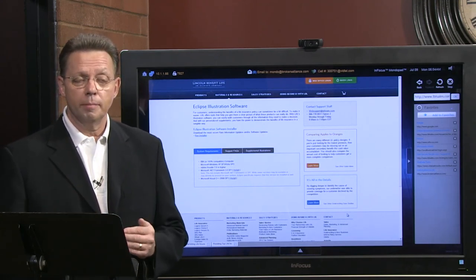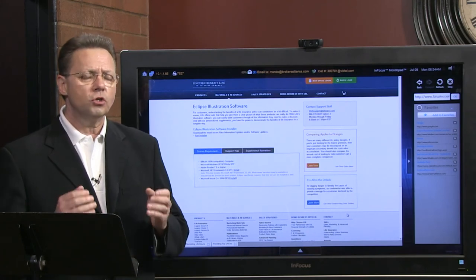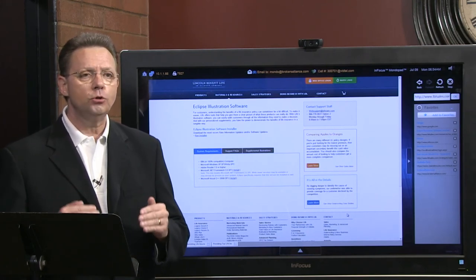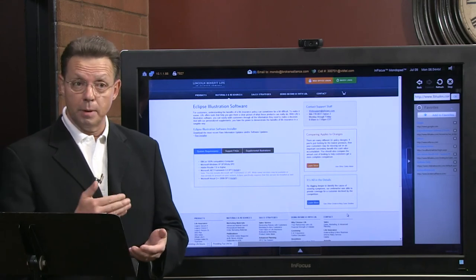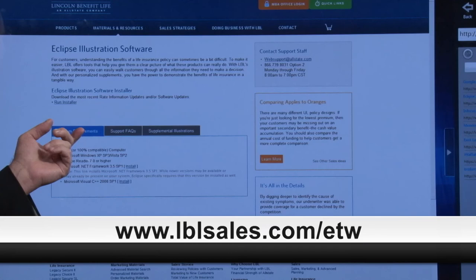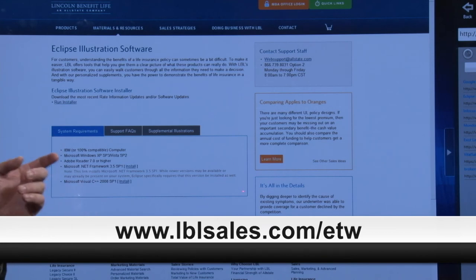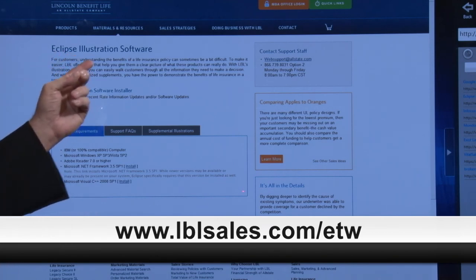Today we're using Lincoln Benefit software. We've been encouraging you these last couple of months to download their software because we believe it's a great tutorial and you'll be able to go with us page by page. Just go to www.lblsales.com/etw. When you come to their site, you'll see Eclipse illustration software.